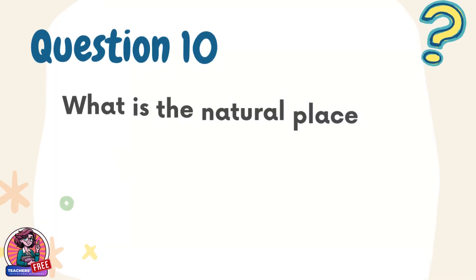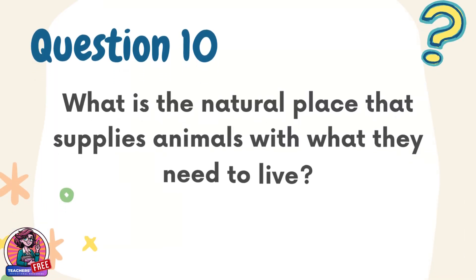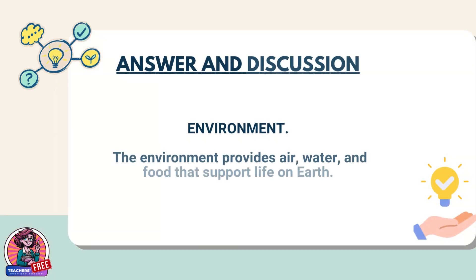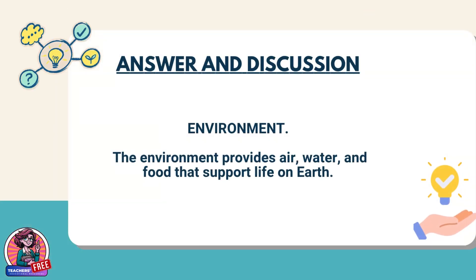Question 10. What is the natural place that supplies animals with what they need to live? Answer: Environment. The environment provides air, water, and food that support life on Earth.